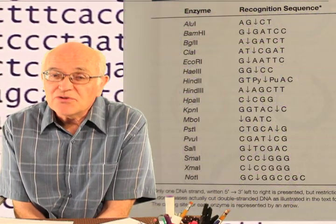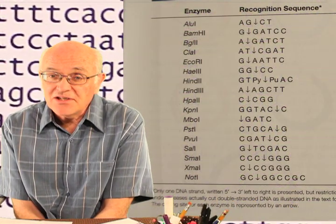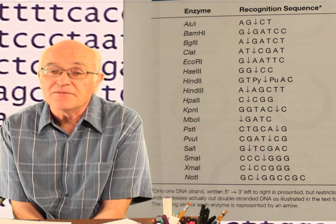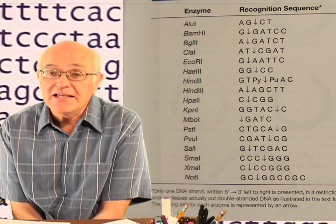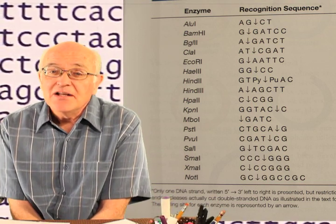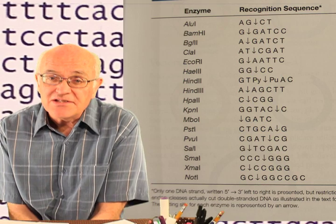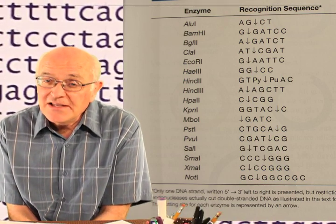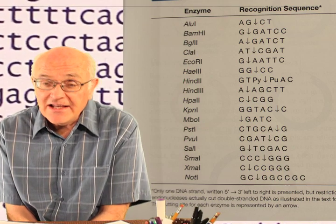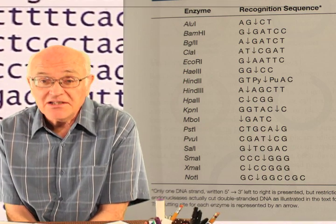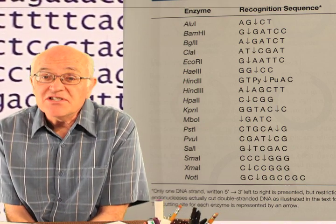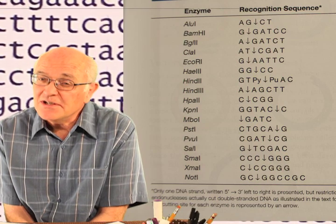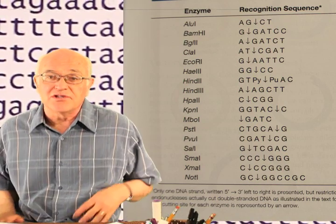To fight off invading DNA, bacteria make restriction endonucleases. These are weapons for bacteria to fight off invading DNA. The restriction endonucleases recognize specific places in DNA and cut the DNA. This is a defense mechanism for bacteria, but it's a tool for molecular biologists.